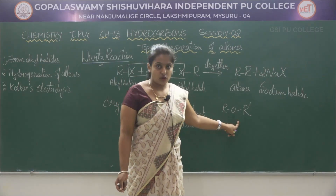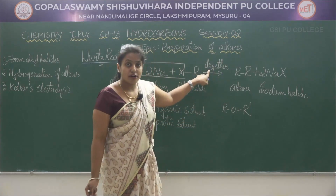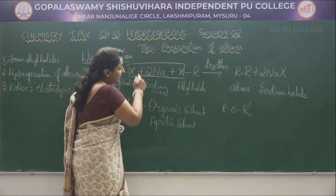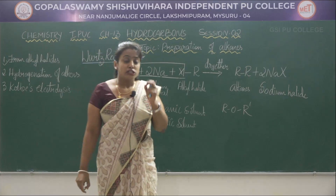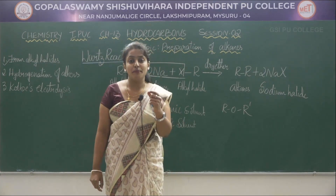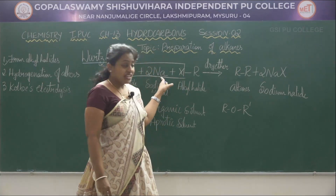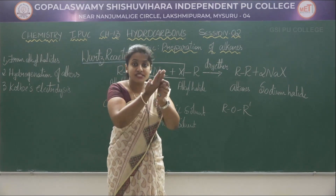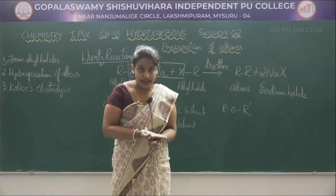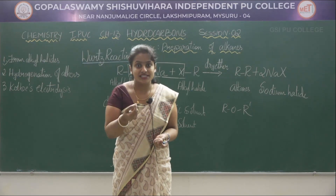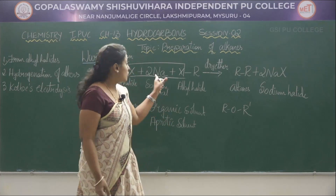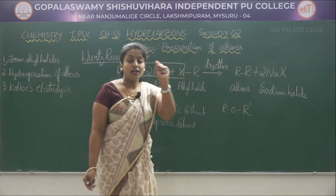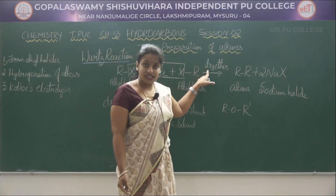Why are we using this aprotic organic solvent in the Wurtz reaction? In this reaction we are using sodium metal, which is highly reactive and is kept under kerosene. When it comes in contact with moisture, it may react vigorously. Therefore, in order to avoid such a vigorous reaction, we are using dry ether.